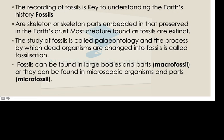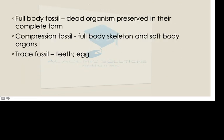Fossils can be large body parts, which are macro fossils, or they can be microscopic very small organisms and their parts, which are micro fossils. There are different fossil types. There is a full body fossil of a dead organism preserved in its complete state, where all parts are still intact. There is a compression fossil, which includes the full skeleton and soft body organs. Lastly, we have the trace fossil, which may include teeth and eggs.